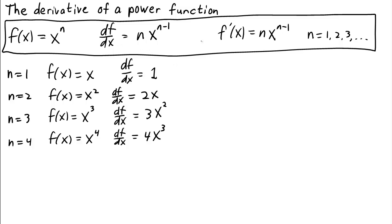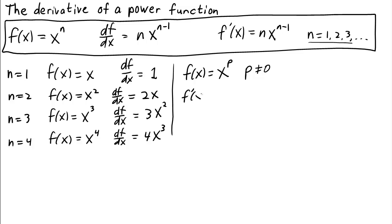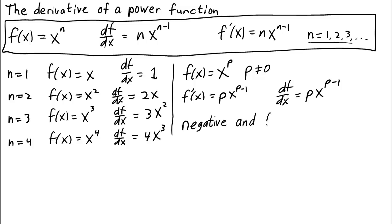The neat thing is that this formula works for any power function, not just for positive integers. We won't show that here, but in general, if f(x) = x^p for any p not equal to zero, then the derivative f'(x) — or df/dx — equals p·x^(p-1). This works for negative powers and even fractional powers, though for fractional powers we may want to restrict x to be positive so that our function still takes on real values.